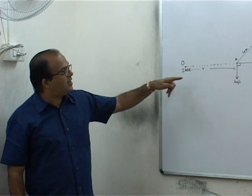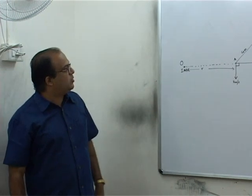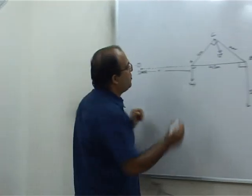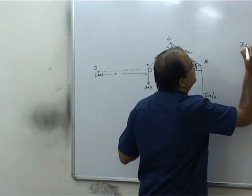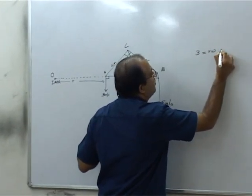Now if you look at the speed at point A, V will be equal to Rω, so therefore 3 is equal to Rω. This is equation 1.